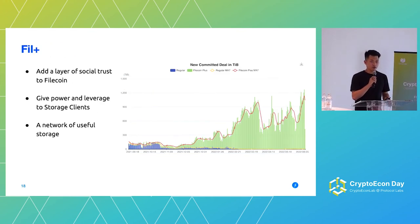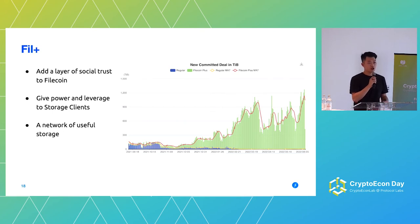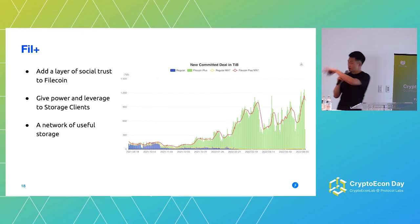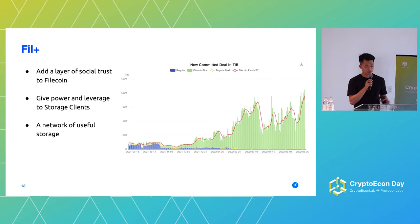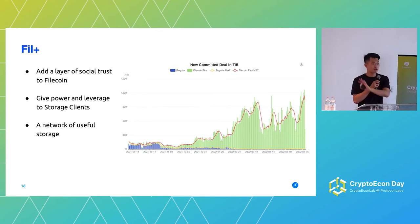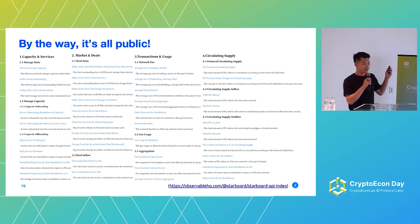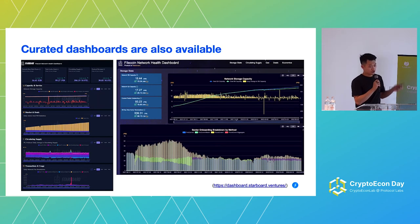We also have a key Filecoin innovation called Filecoin Plus, which adds a layer of social trust onto Filecoin and gives a lot more power and leverage to storage clients. For a storage provider who stores Filecoin Plus data, they get a 10x boost to their power, which increases the chance of earning a block reward. The mission is to incentivize more useful storage on the network. This program has seen tremendous adoption in recent months — we are actually onboarding more than one petabyte of useful data every single day. All these charts are public, and there's a ton of data, APIs, and created dashboards for a bird's eye view of what's going on in the network.